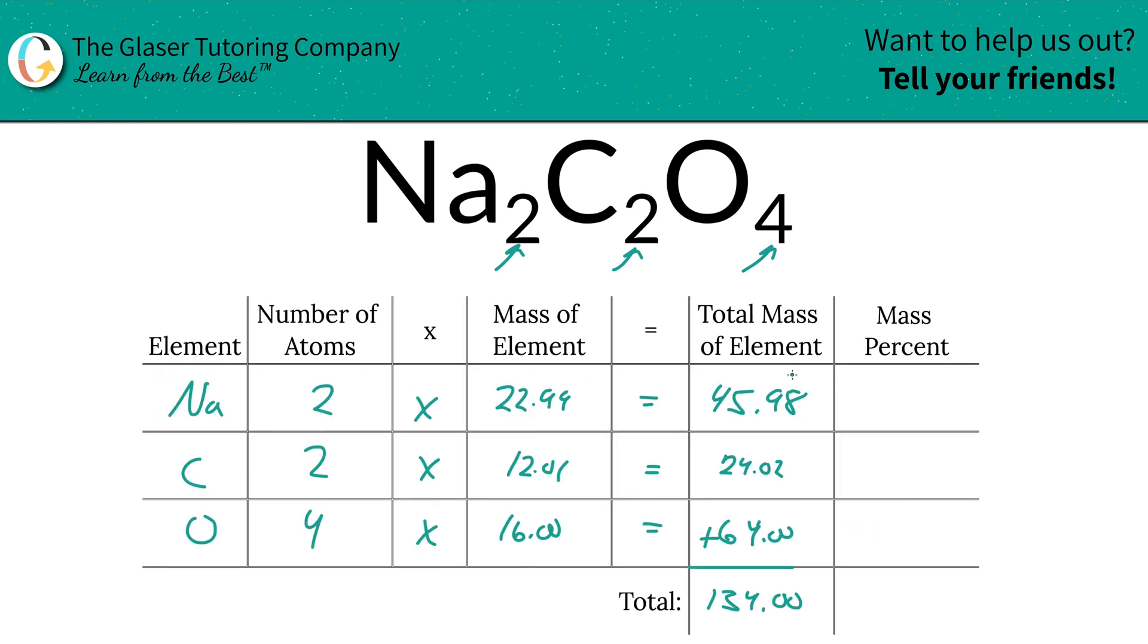So to find the mass percent of sodium, we're simply going to take the total mass of the sodium in the compound, 45.98, divided by the total mass of the entire compound, 134. Just leave out the zeros. It does not affect the calculation, but it might affect the sig figs. Just be careful. So this is 34.31%. If you've never heard of sig figs before, thank goodness.